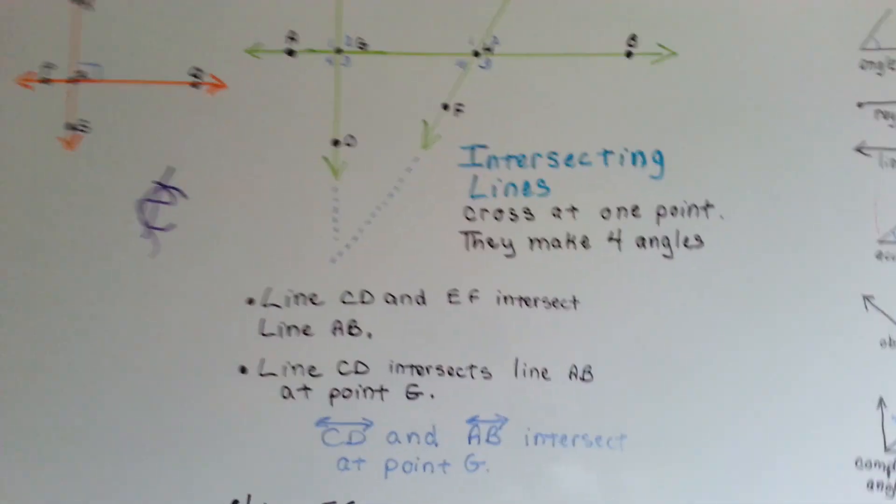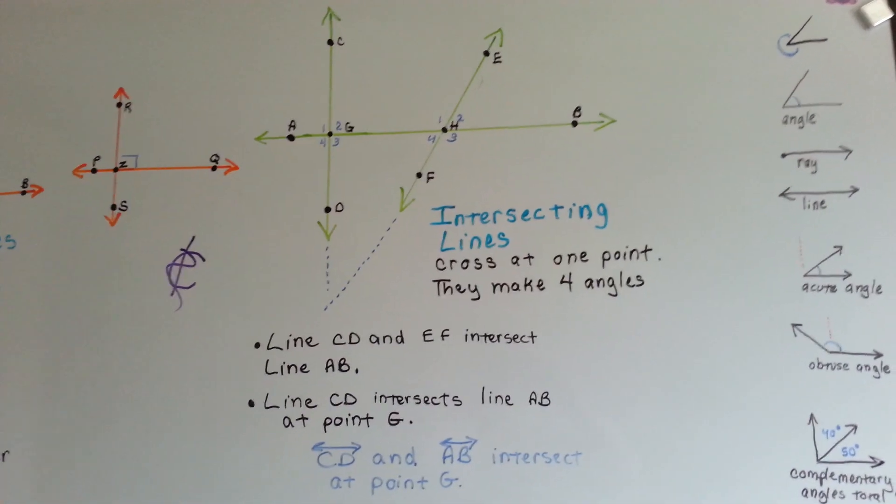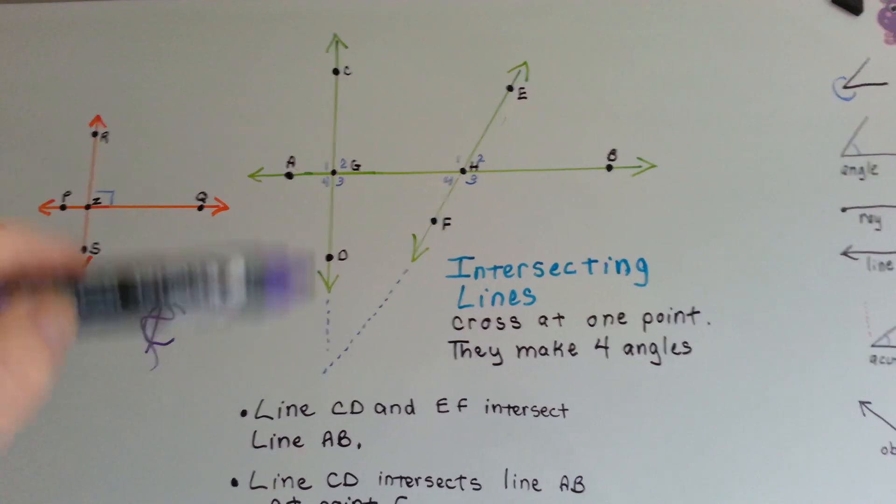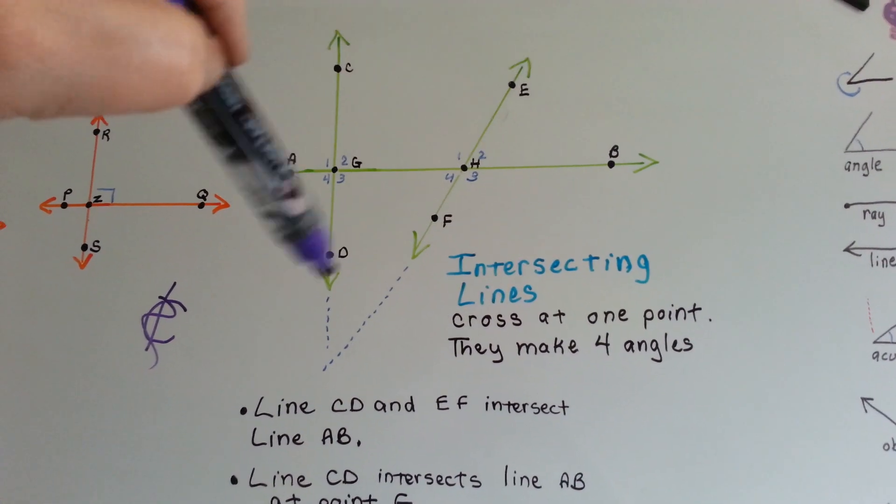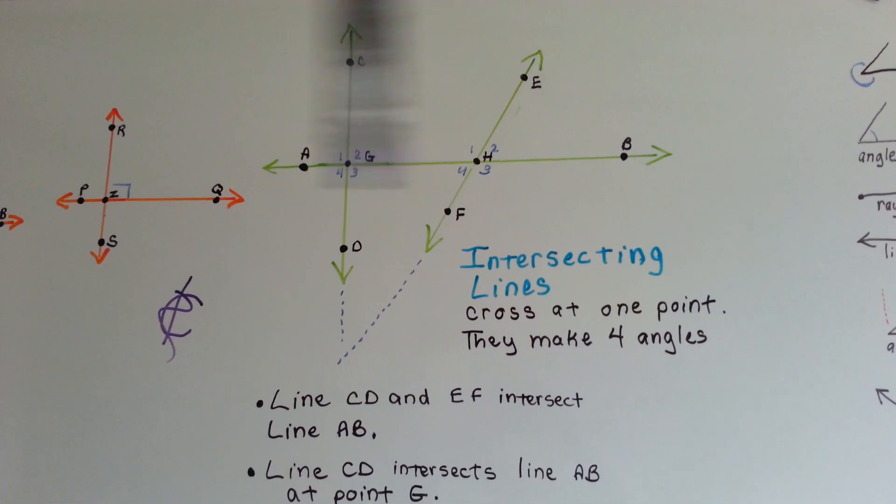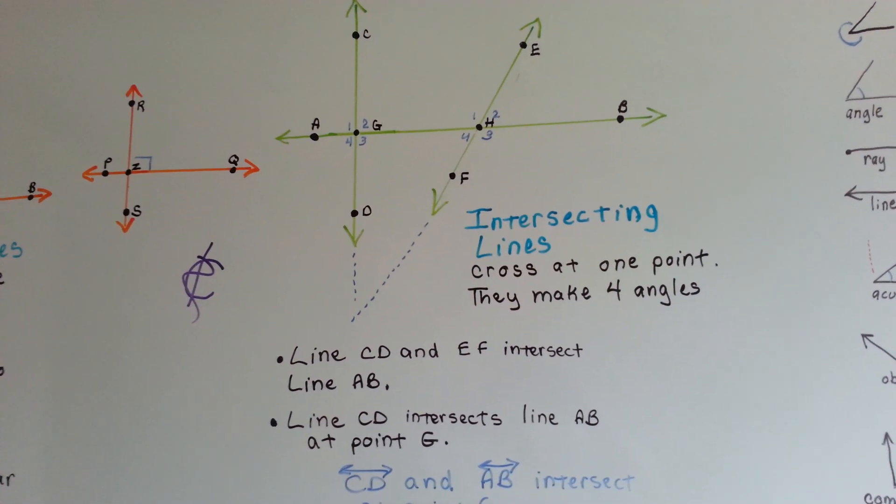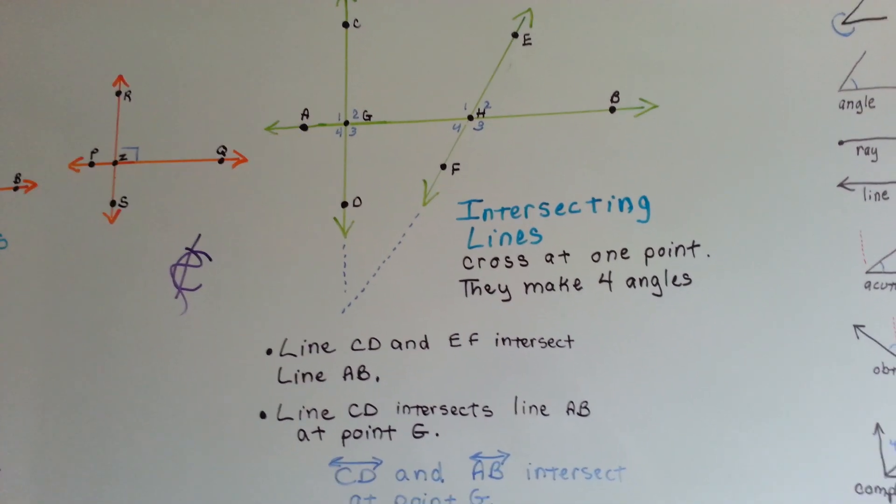For the intersecting lines, looking up here, line CD, alright, that's this one, and EF, that's this one, intersect line AB. See that? CD intersects line AB at point G, right there. See?